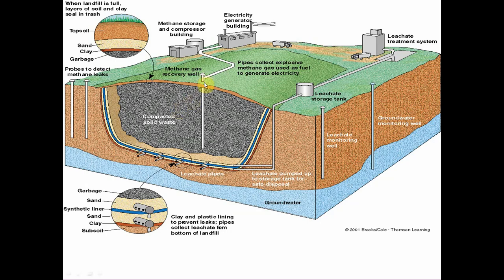Here we have a well drilled into the garbage — this is our methane recovery well. As trash decomposes, we generate methane gas, CH4. The CH4 moves into the well, which is pumped to an electricity-generating building where the landfill burns the methane to generate electricity. Here are the monitoring wells: generally every three months we sample the groundwater to ensure our liner is still intact and leachate is not getting off site.